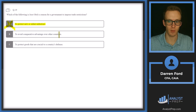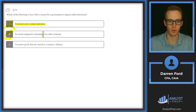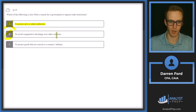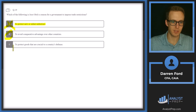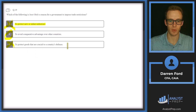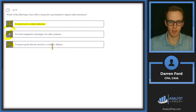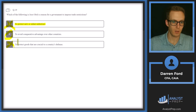Option B: to avoid comparative advantage over other countries. This is likely our answer since there's no reason you'd want to avoid a comparative advantage. Comparative advantage means you can produce more at a lower cost and export to other countries — typically very economically lucrative. You wouldn't impose a trade restriction to avoid that. Option C: to protect goods crucial to a country's defense — also a valid reason, like the US restricting semiconductor exports to China. Answer B.